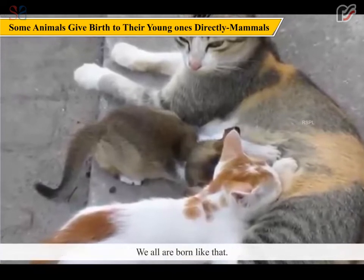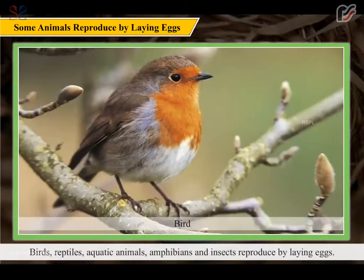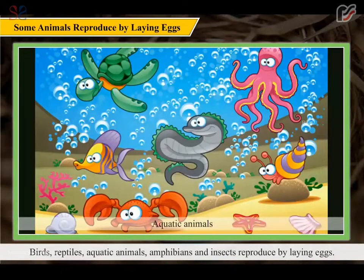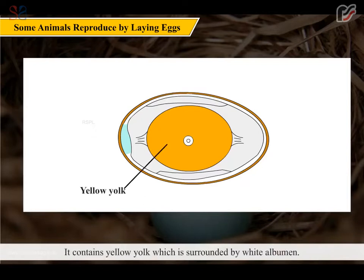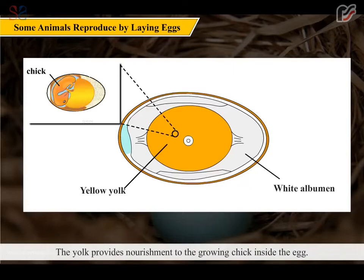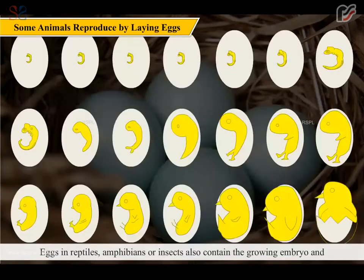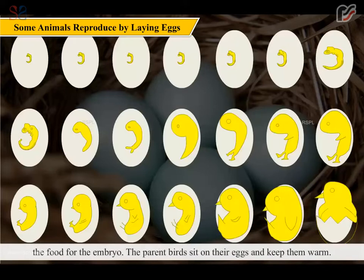We all are born like that. Birds, reptiles, aquatic animals, amphibians and insects reproduce by laying eggs. An egg of a bird has a hard protective shell. It contains yellow yolk which is surrounded by white albumin. The yolk provides nourishment to the growing chick inside the egg. Eggs of reptiles, amphibians or insects also contain the growing embryo and food for the embryo.